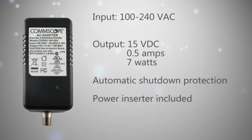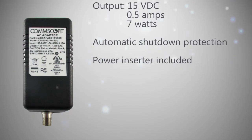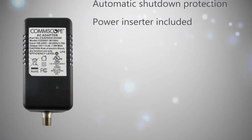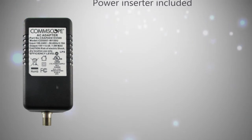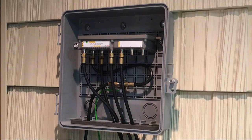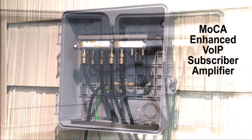When the installation error is corrected, the adapter will automatically reset and power will be restored. The amplifier kit also includes a power insertion module, which can be used when remote powering is required. The MoCA-enhanced Voice over IP subscriber amplifier is the latest addition to Comscope's RF connectivity product portfolio. For more detailed information, please visit our website at www.comscope.com.